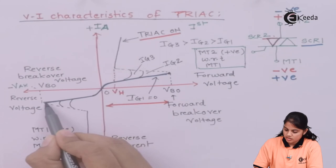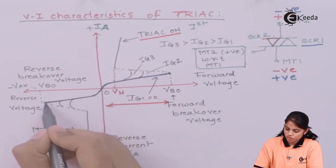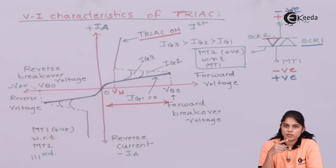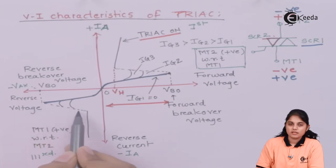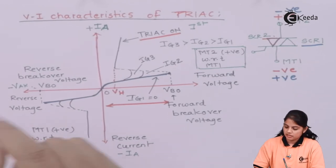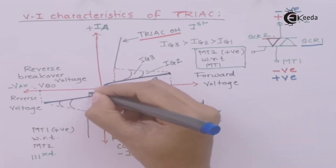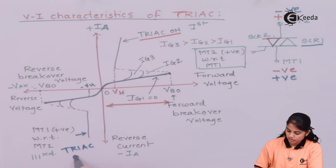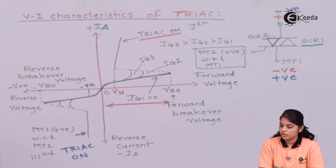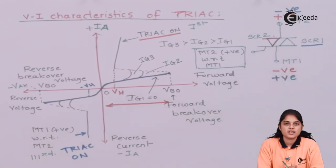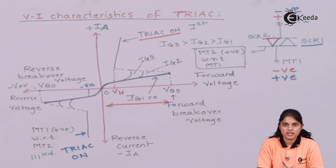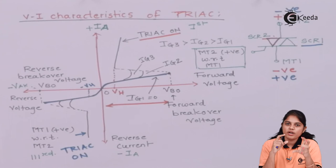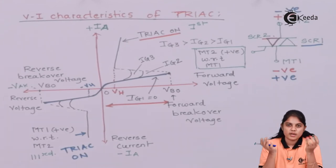This small current is known as forward leakage current in the first quadrant region and reverse leakage current in the third quadrant region. Once you reach the reverse breakover voltage, breakdown takes place and there is a sudden increase in current, turning the TRIAC on, with the voltage across the TRIAC reducing to minus VH. The SCRs are connected such that one SCR remains forward biased regardless of direction, which is why the TRIAC is known as a bi-directional device.